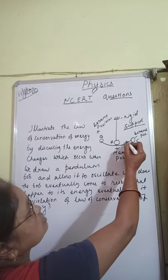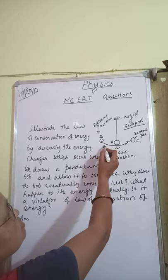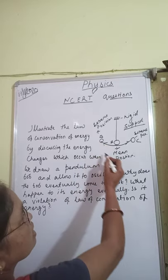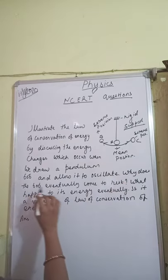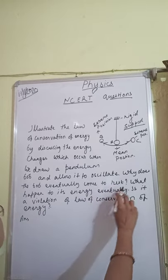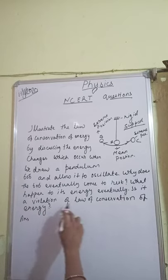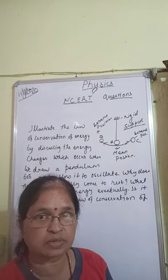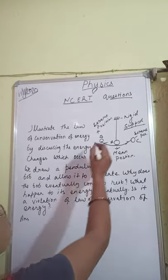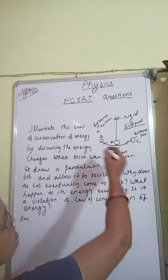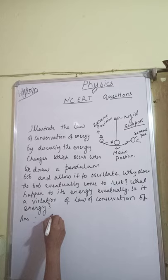The pendulum moves from mean position to extreme position, comes back to mean position, then goes to the other extreme, and returns again. It also asks: why does the bob eventually come to rest, and is it a violation of the law of conservation of energy? Let us discuss the energy changes when the bob oscillates.